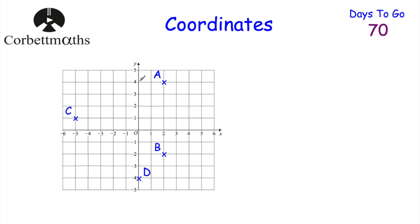So here we've got some coordinates — A, B, C, and D. What I'd like you to do is pause the video and write down the coordinates of point A, point B, point C, and point D.